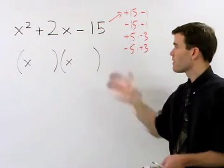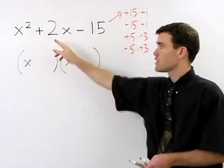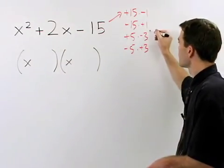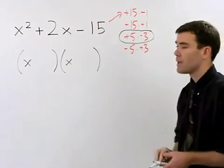So which pair of these factors adds to positive 2? Positive 5 and negative 3.